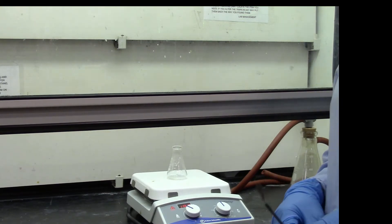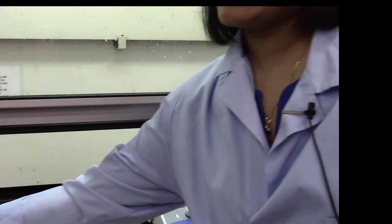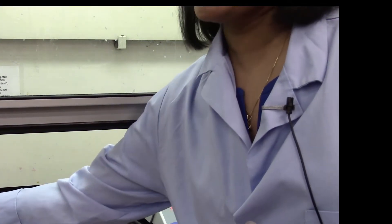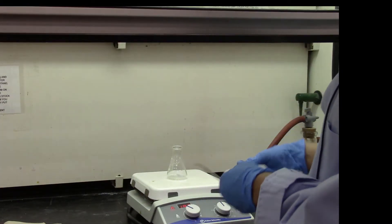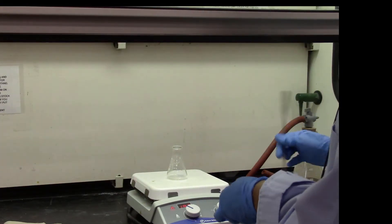So now I'm going to add the reducing agent sodium borohydride in small portions. I have about 0.35 grams of sodium borohydride. So I'm going to add it to the mixture over here.